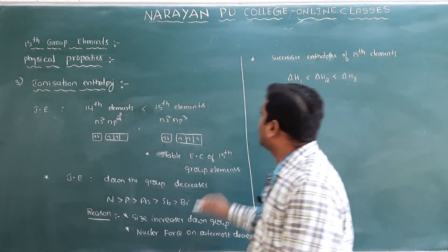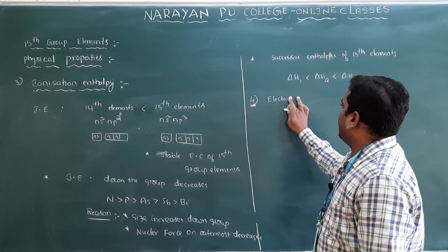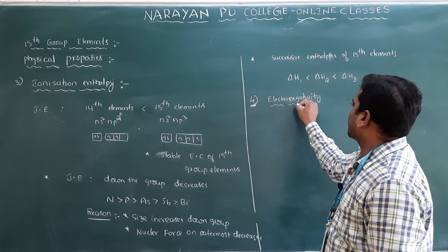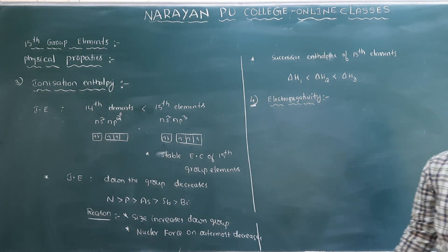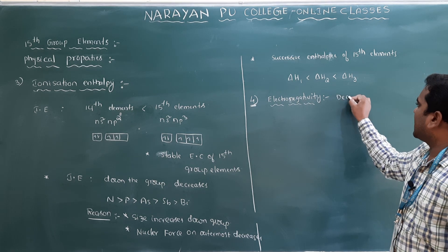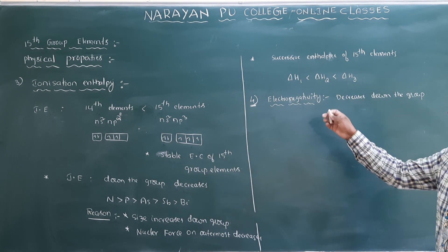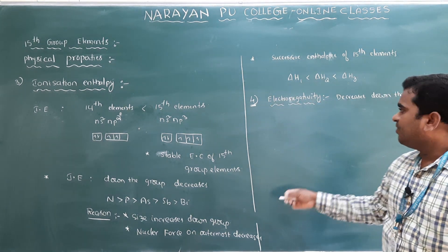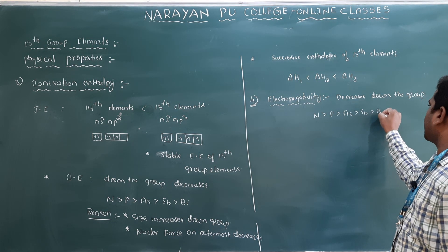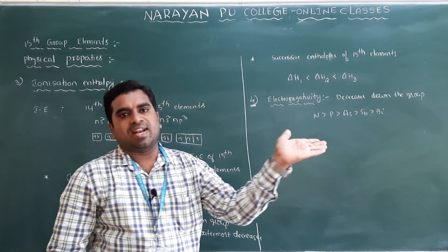The fourth physical property is electronegativity. Electronegativity decreases down the group and increases across the period. For 15th group elements, nitrogen has the highest electronegativity, decreasing through phosphorus, arsenic, antimony, down to bismuth which has the lowest electronegativity.